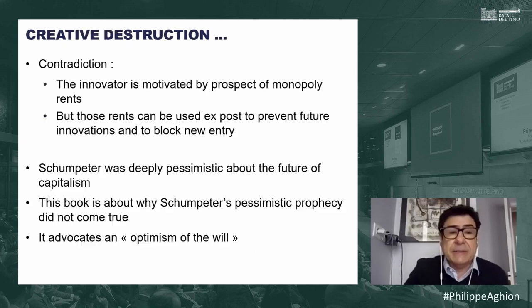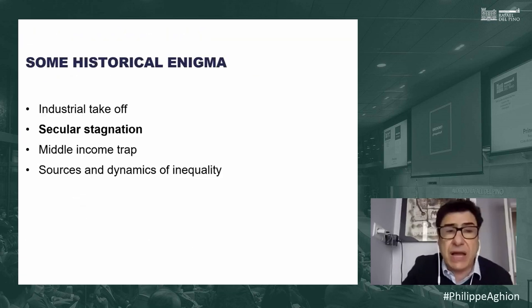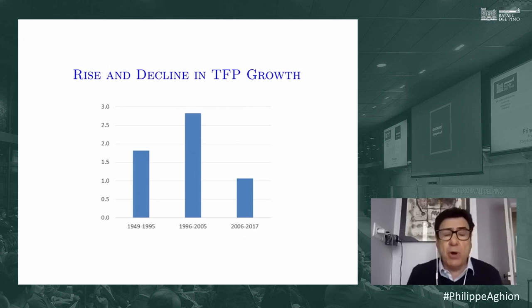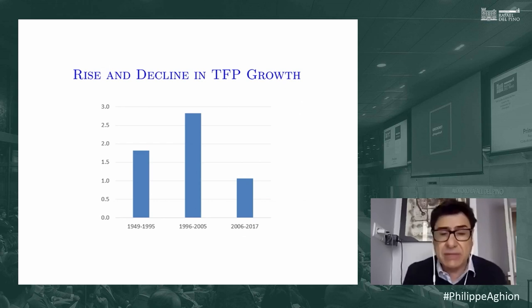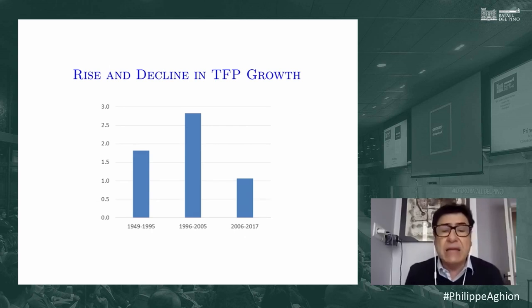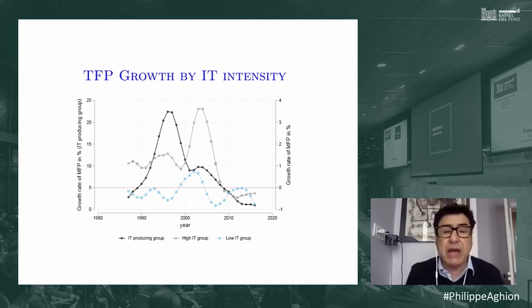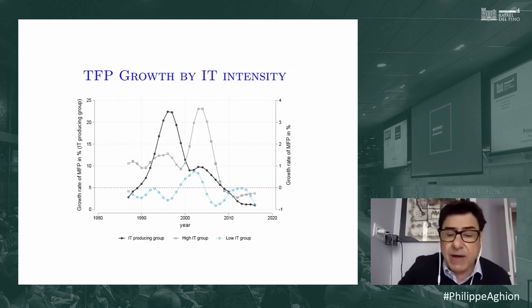The second enigma is secular stagnation. TFP growth went up a lot between 1995 and 2005 in the US, then declined sharply after 2005. The most compelling explanation involves the IT revolution — this rise and fall in growth is mostly observed in IT-producing sectors and IT-using sectors. What also happened is that the entry rate of new firms declined since the 2000s.